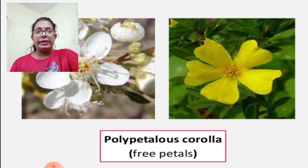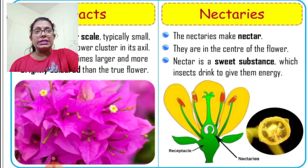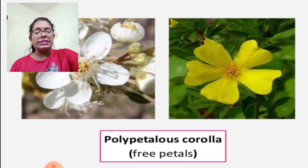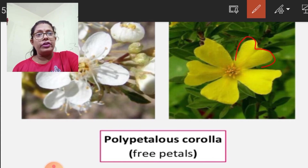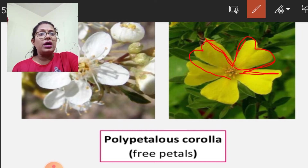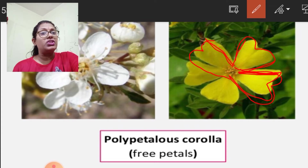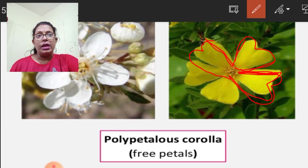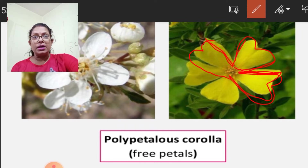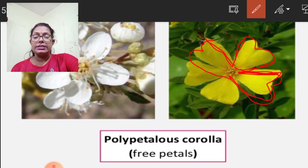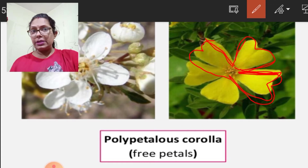In polypetalous corolla, all the petals are free from each other. A notch separates every two petals. You may have seen many such flowers — the common Sadabahar flower has free petals. Similarly, in the Malvaceae family, China Rose also has petals that are free from each other.